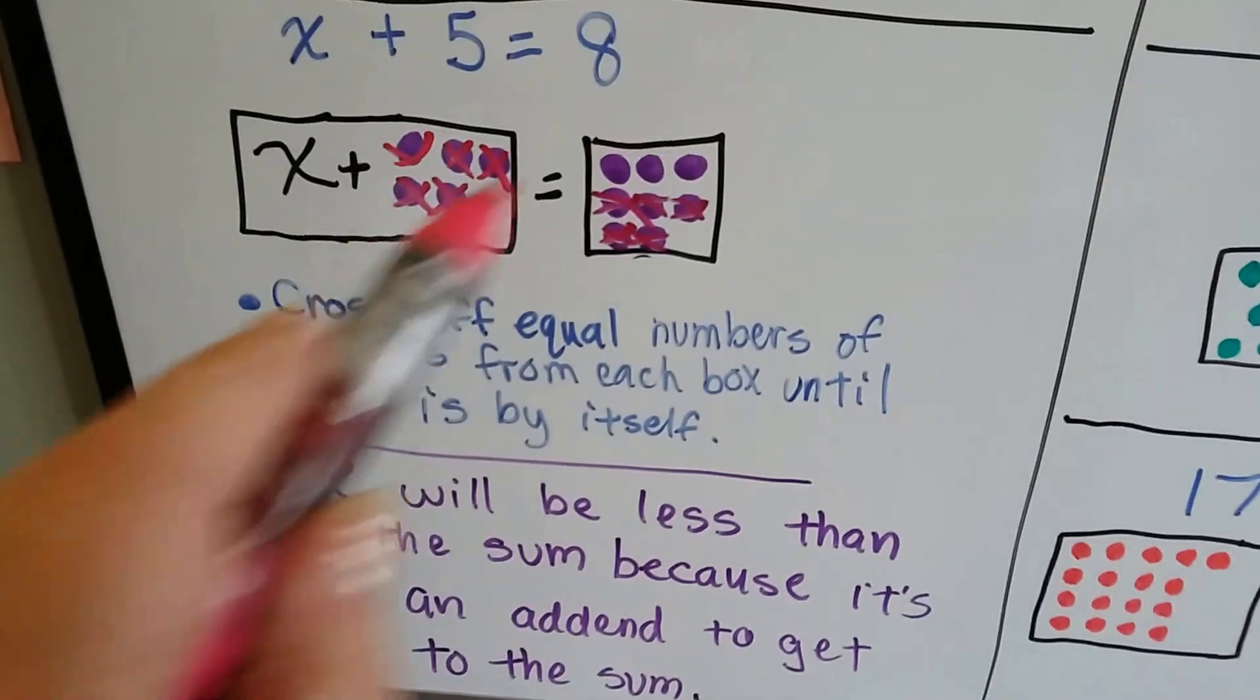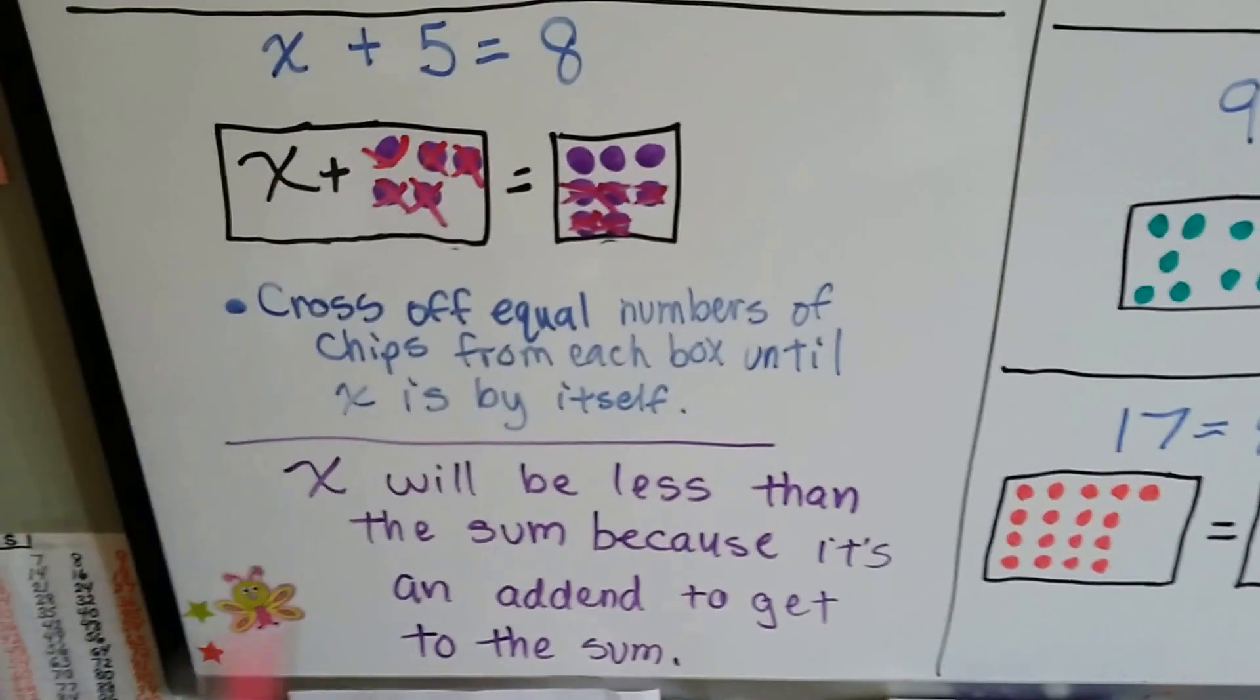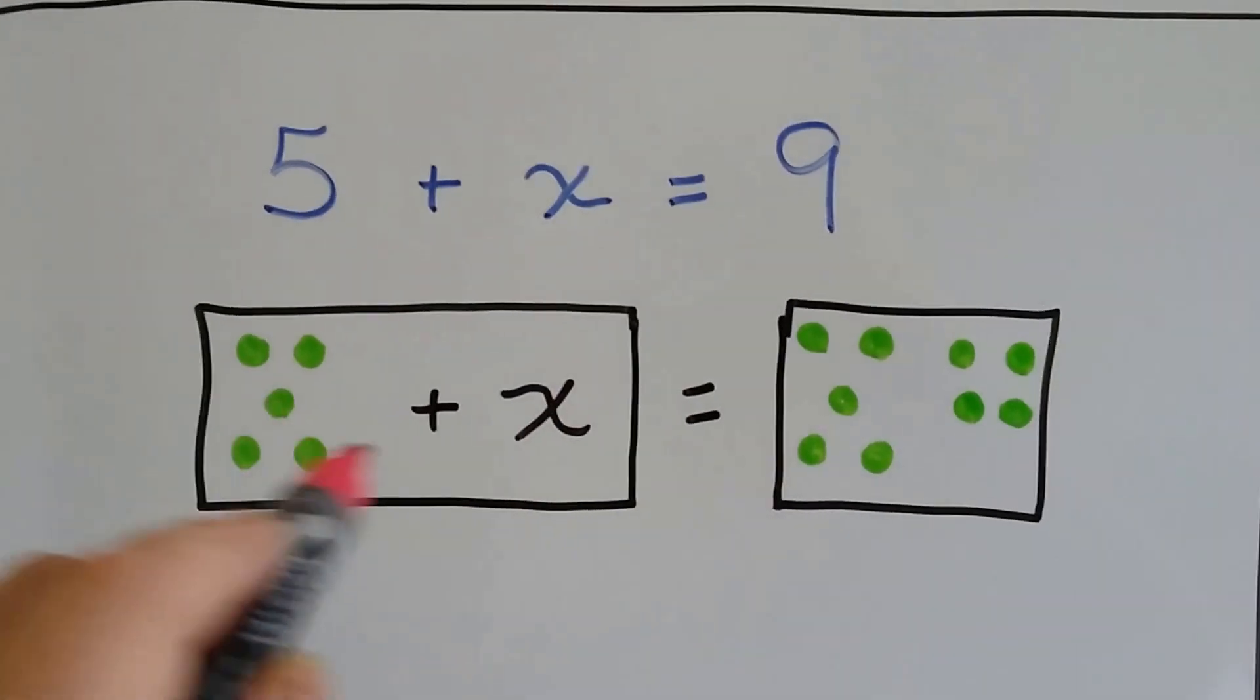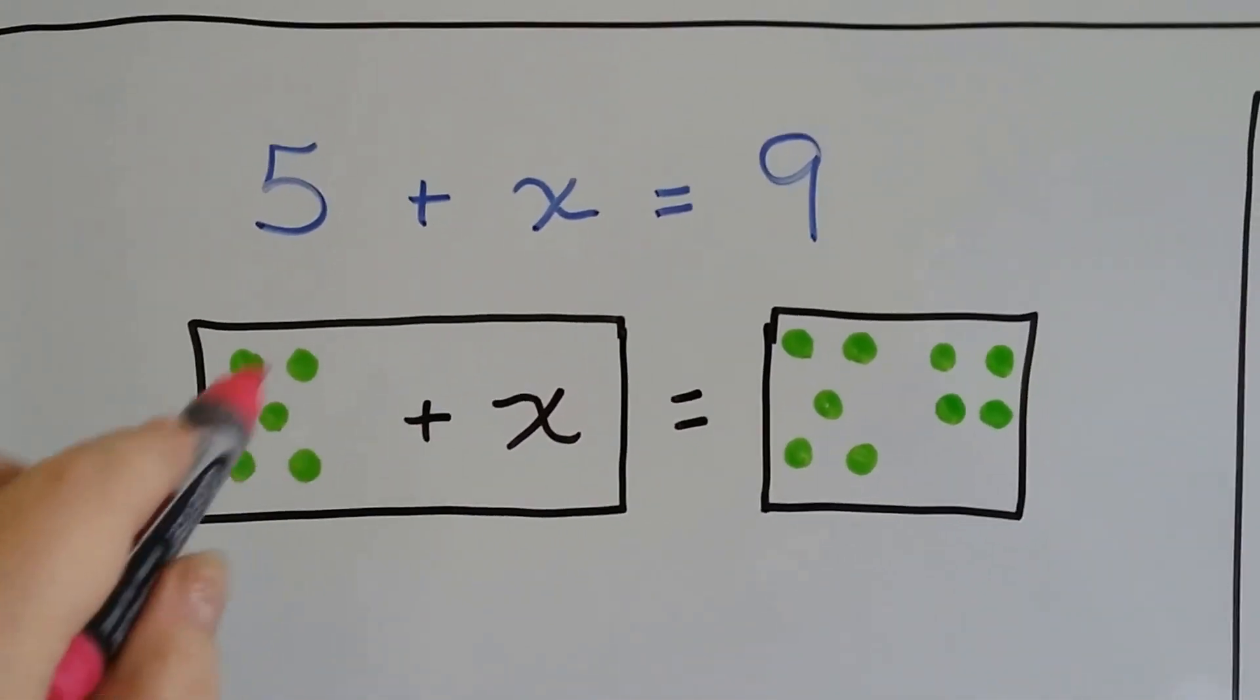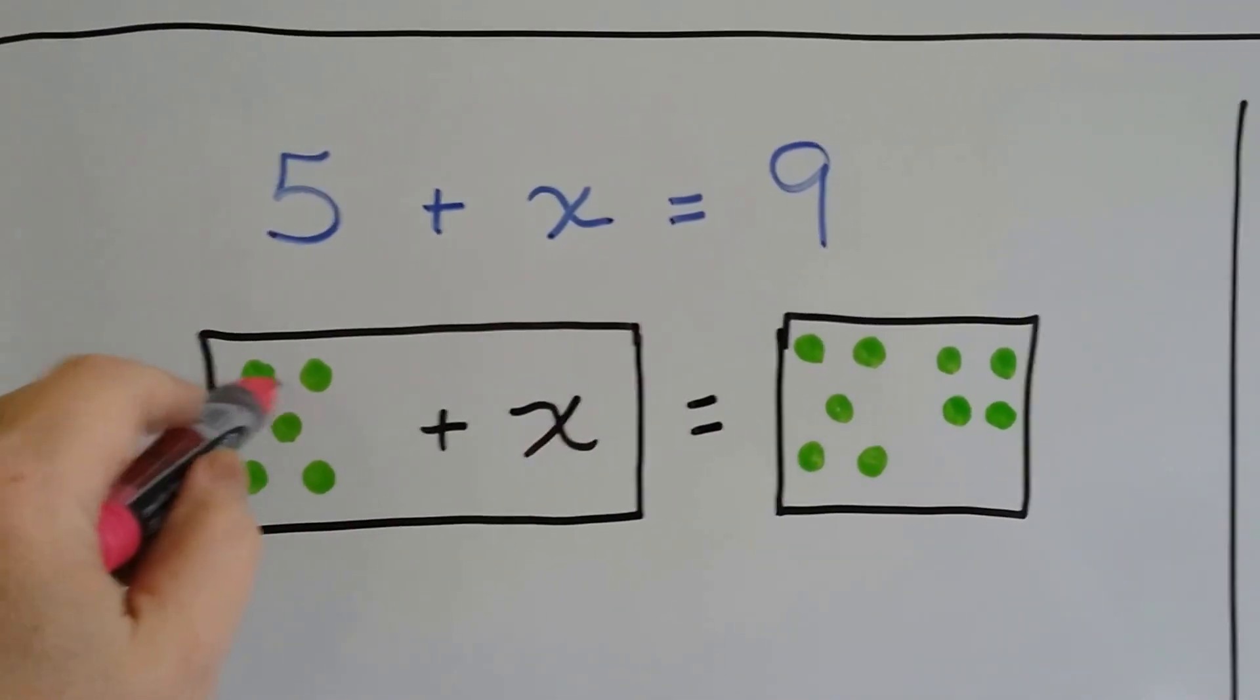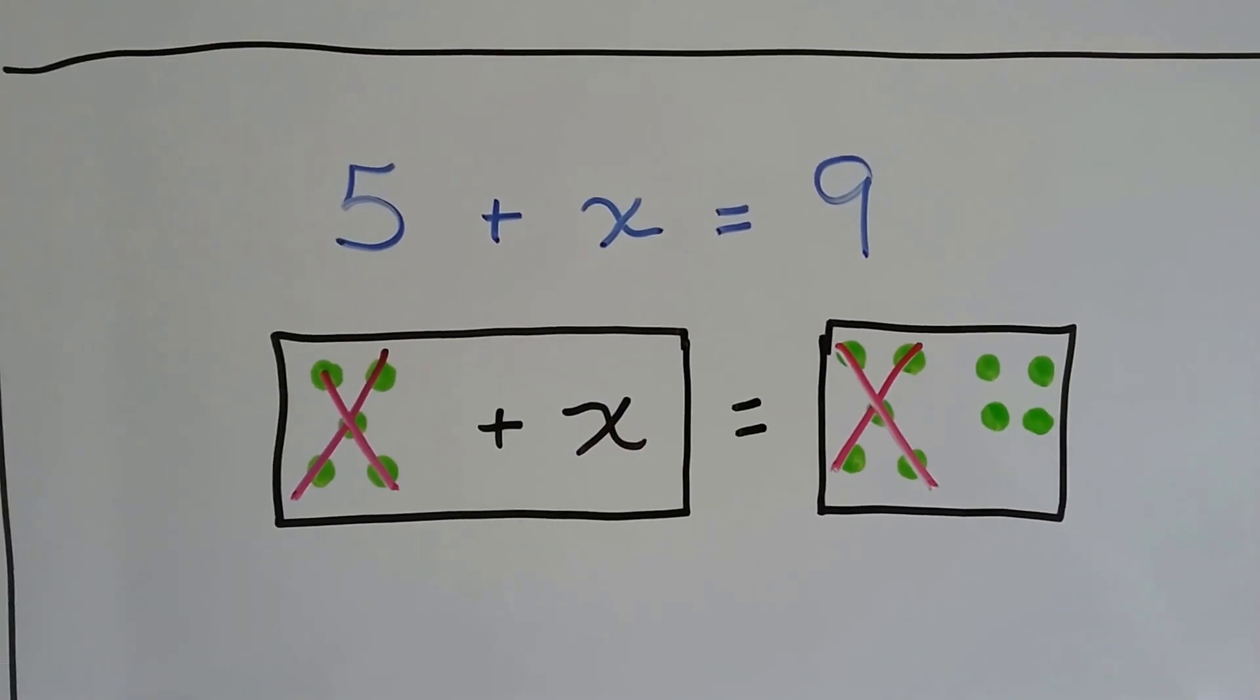x will always be less than the sum because it's an addend getting to the sum. What if we had 5 plus x equals 9? We've got our 5 plus our x, our equal sign, and then our 9 in this box. We need to take away this 5 and take away 5 from this side so that x is by itself. So we take away 5 and we take away 5 and we see that x equals 4.